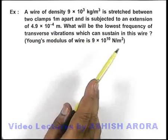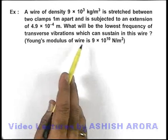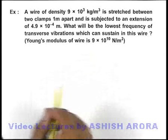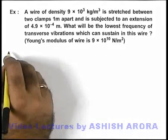It is asking what will be the lowest frequency of transverse vibration which can sustain in this wire. It is also given that Young's modulus of wire is 9 × 10¹⁰ N/m².